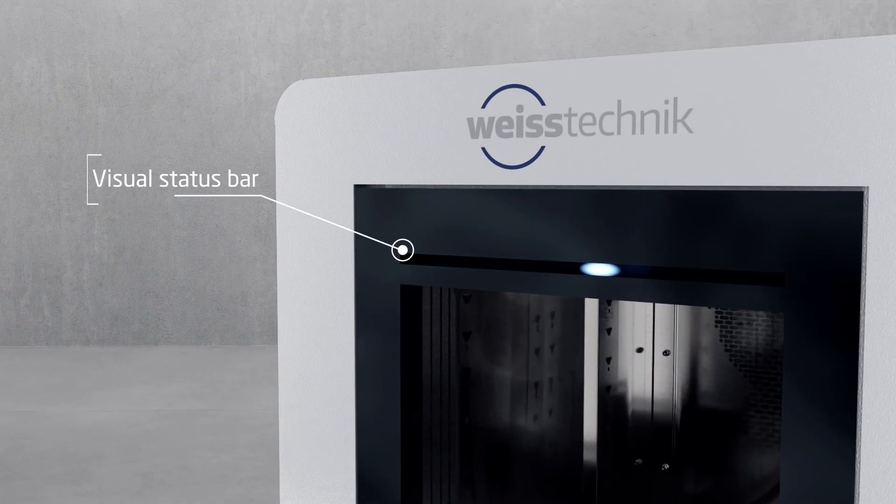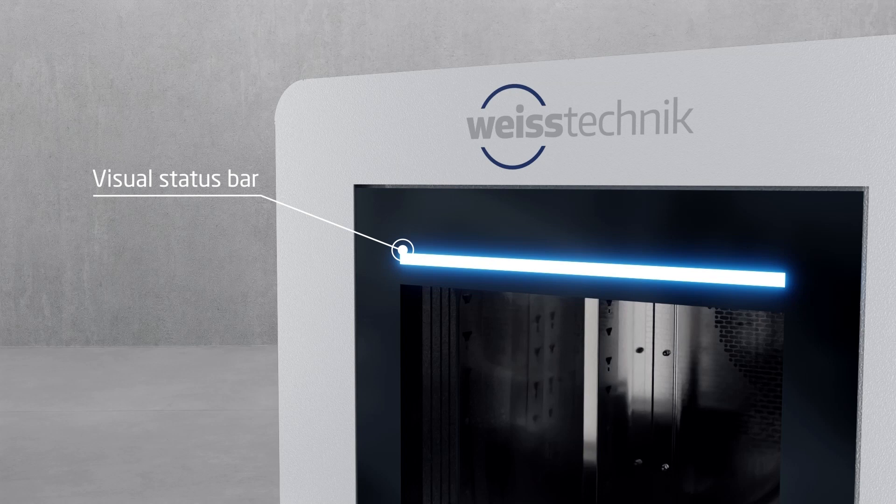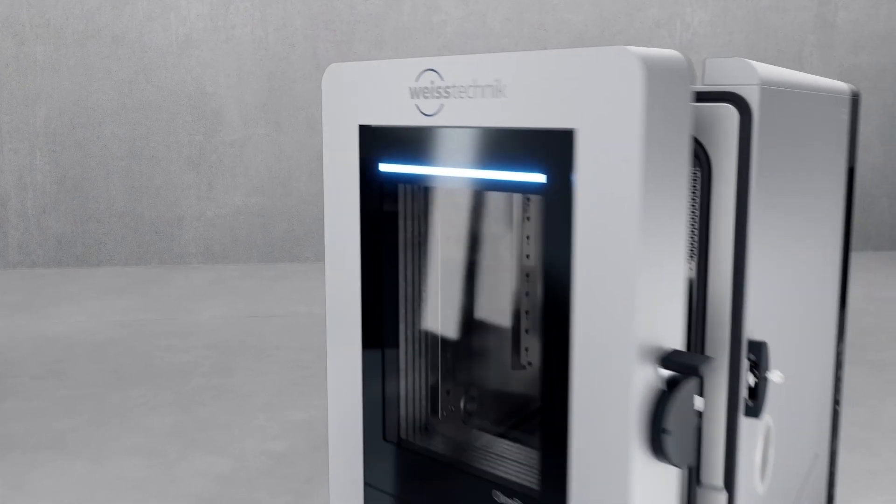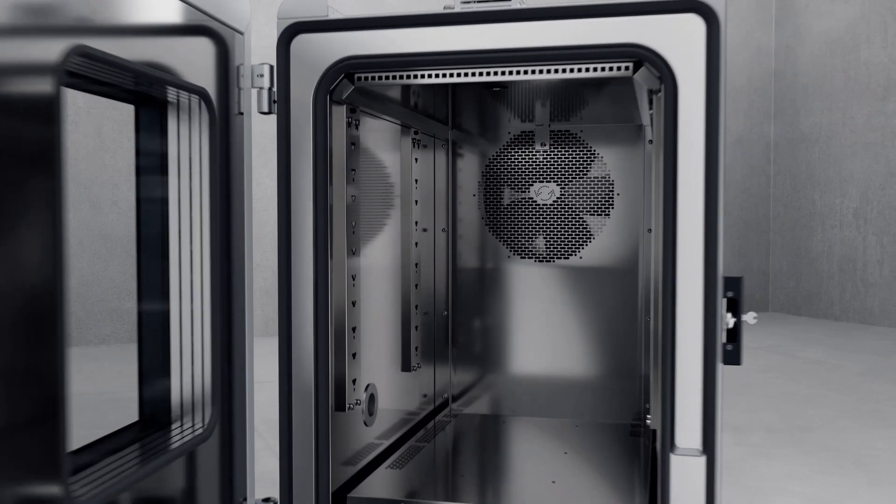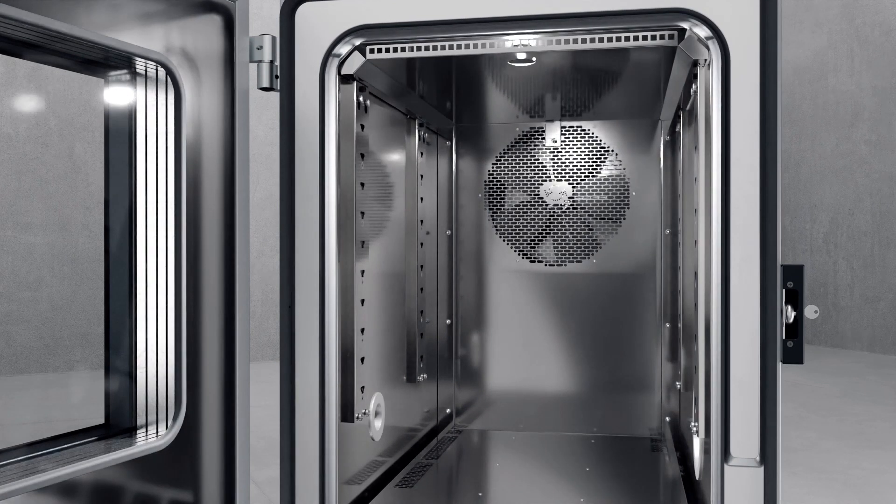The LED status bar integrated into the test chamber door shows you the operating status of your test clearly visible in the common traffic light colors, even from a distance. In addition, there is the test progress function which continuously fills the status bar. This allows you to quickly glance at the chamber status and know if you need to take action. With this feature, you always have all test chambers under control.